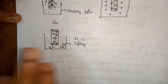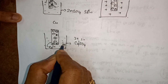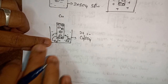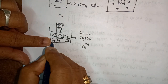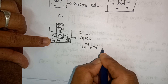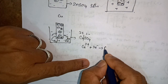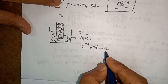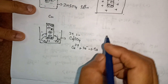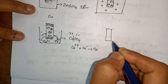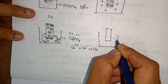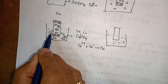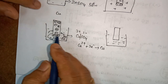During this process, when I keep the copper rod in copper sulfate solution, the Cu²⁺ ions from the solution will move towards the copper rod. The Cu²⁺ ions pick up 2 electrons from the rod and become copper metal deposited on the rod. Because of this, the rod is left with a positive charge.